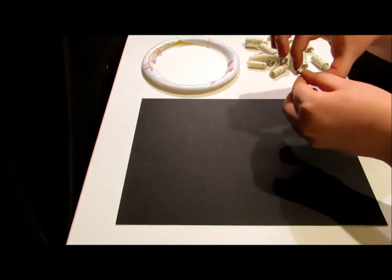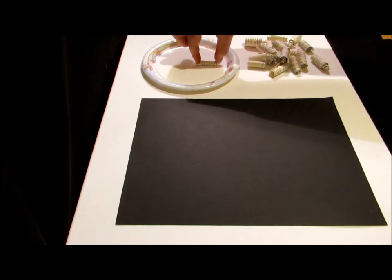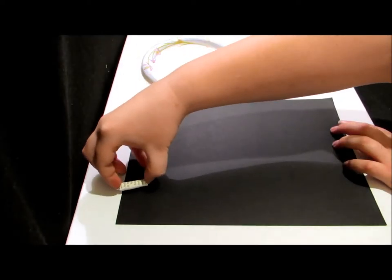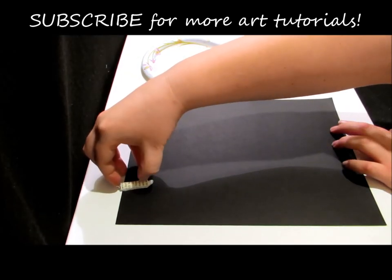Once you've got your rolls, you're just going to take them, dip them in some glue, wipe that glue off so it's not too thick, and then just make whatever kind of picture you want.